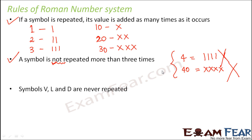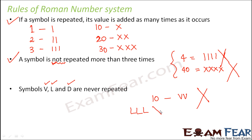Now, is it that all symbols can be repeated? No, there are certain limitations. For example, do you think you can write 10 as VV, because this is 5 and this is 5, and 5 plus 5 is 10? We cannot write this because the symbols V, L and D can never be repeated. So you can never have something like VV or LL or DD. These are the first basic rules about repetition of symbols.